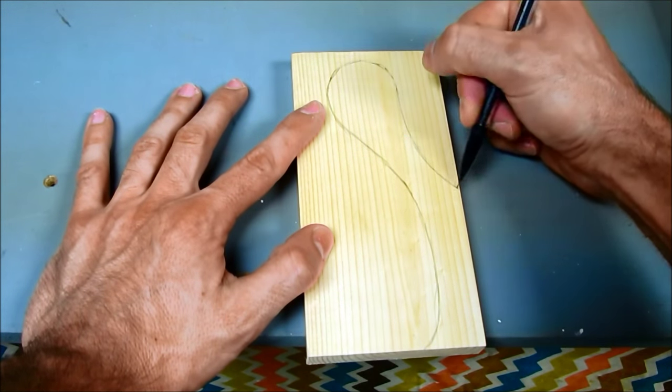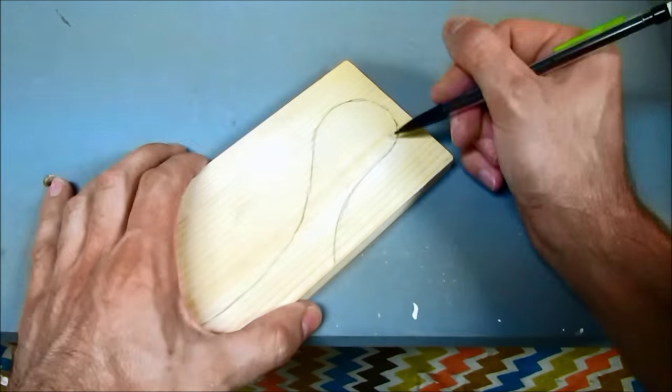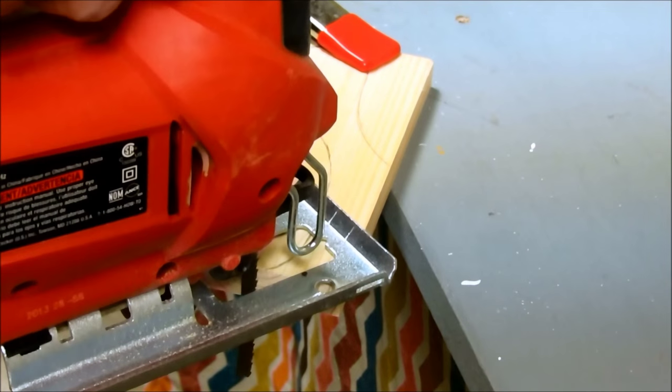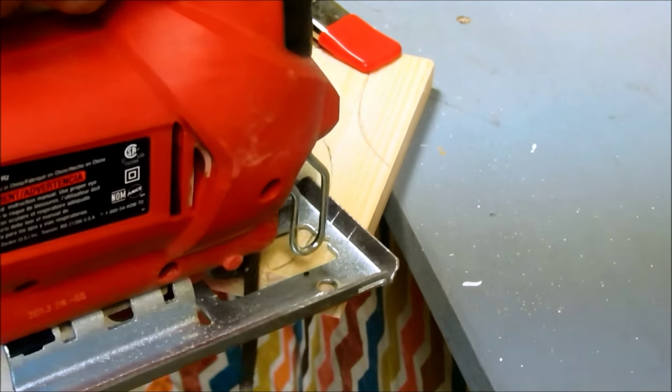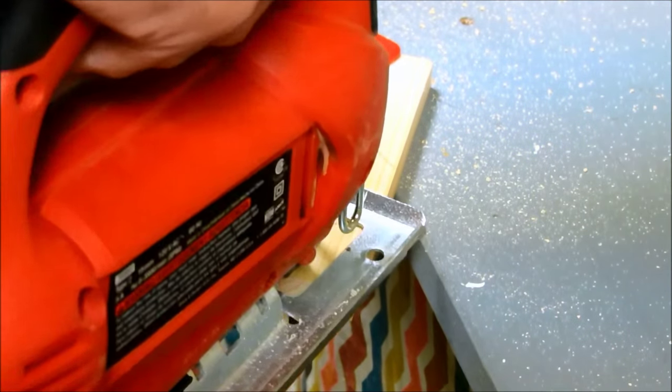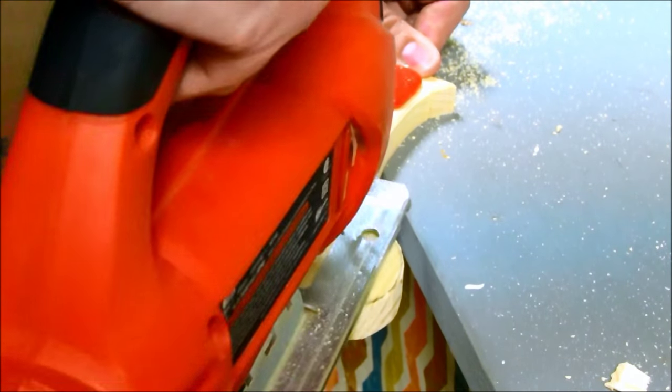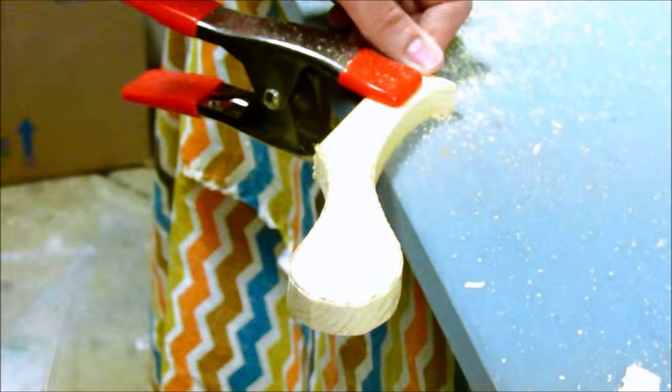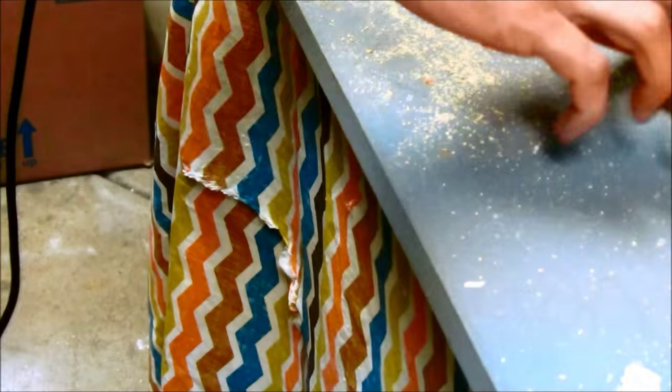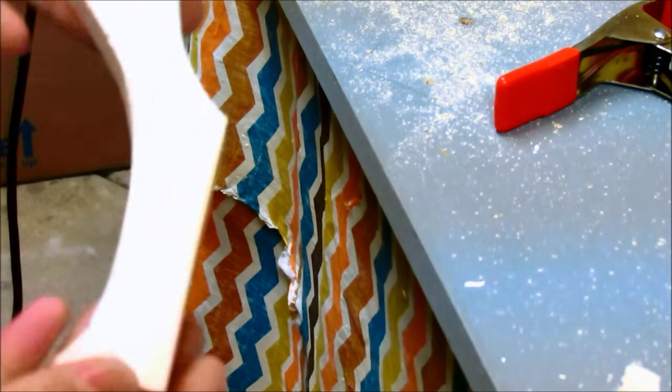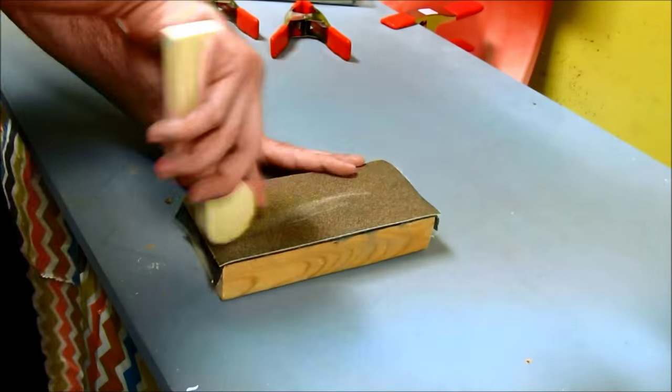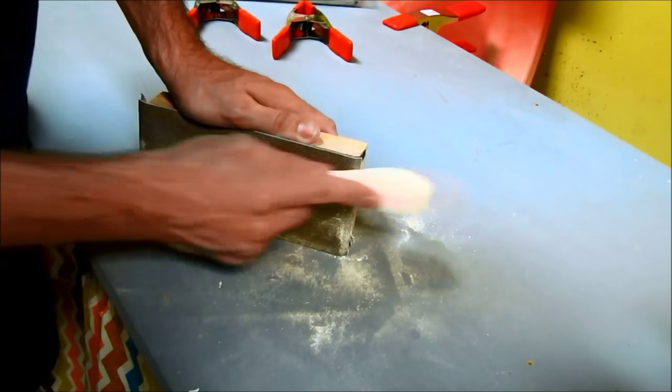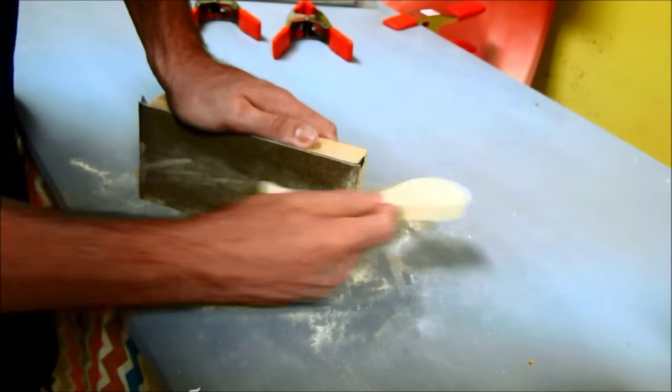I cut probably about an eighth of an inch away from the lines, and then I sanded everything until I reached the desired shape. This one was fairly easy, no problems—about ten to fifteen minutes of sanding.